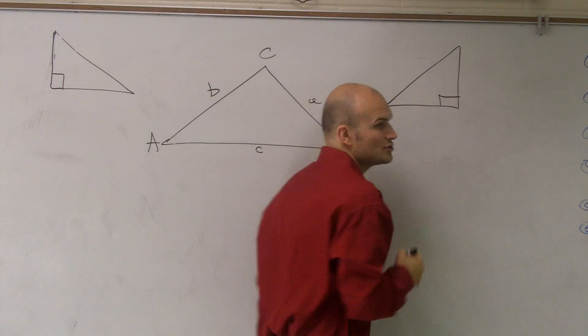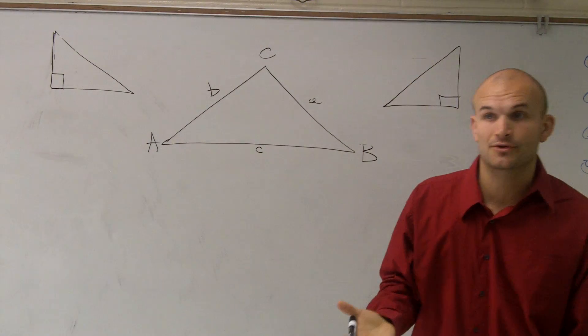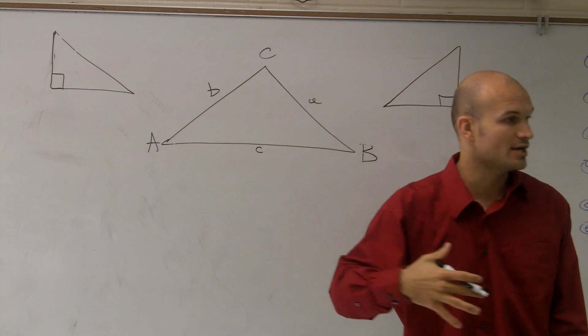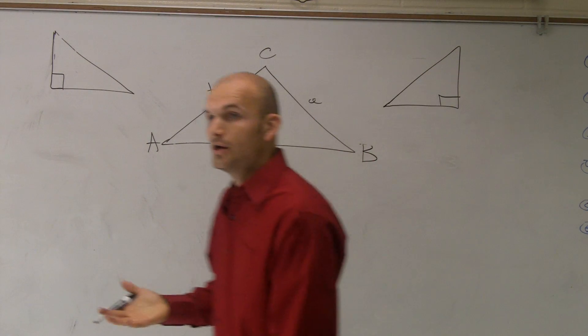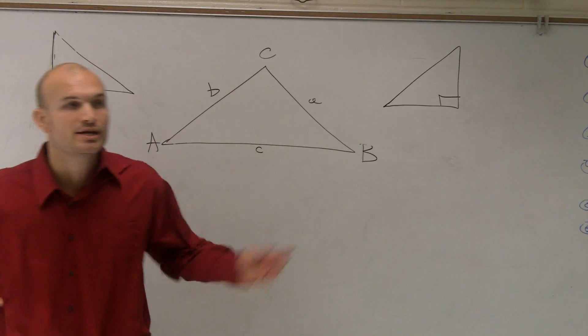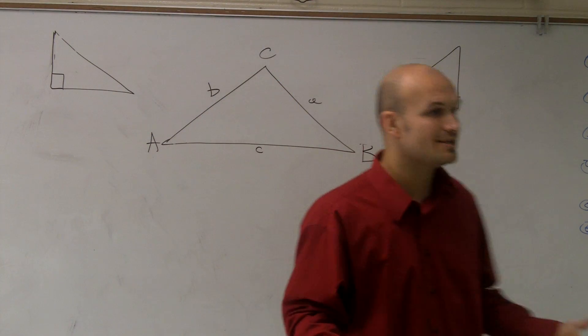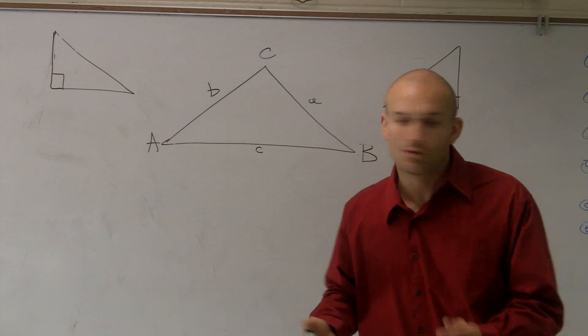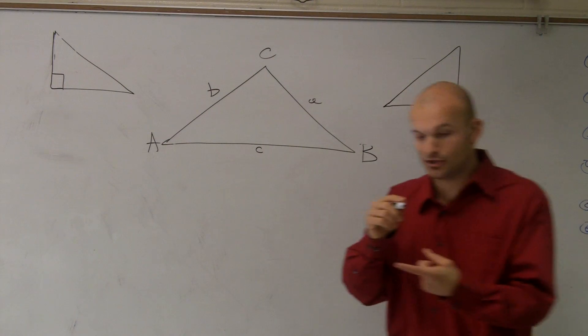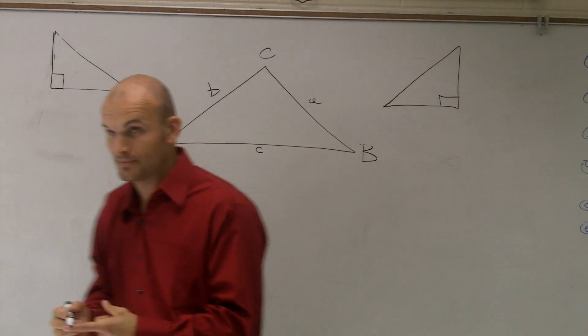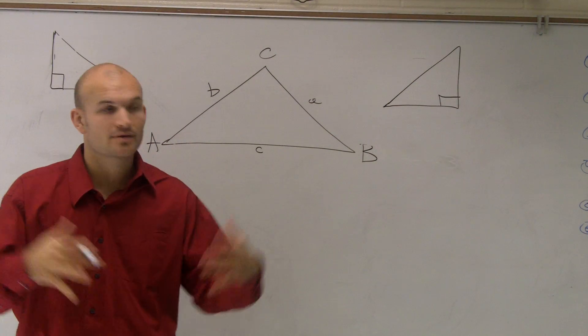And that box told you that you had a 90-degree angle, right? And a 90-degree angle, we call it a right angle, and that means you'd have a right triangle. And when you had a right triangle, you could do anything you wanted. Well, not really anything you wanted, but that opened up the doors for you to apply Pythagorean's Theorem. Oh, I can do Pythagorean's Theorem, it's a right triangle.